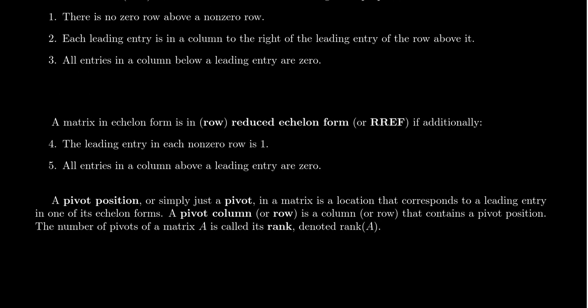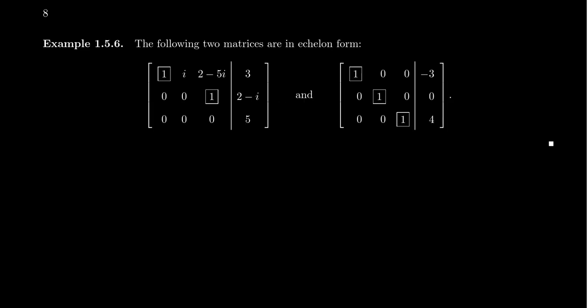When a matrix is in echelon form, those leading entries we call the pivot positions or the pivots. A row that has a pivot in it we call a pivot row; a column that has a pivot in it we call a pivot column. Not every row or column has pivots, so we may have a non-pivot column or a non-pivot row. The number of pivots in a matrix we call the rank of the matrix, denoted rank(A), where A is the matrix.